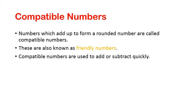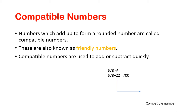Compatible numbers are used to add or subtract quickly. Let's see one example. Look at the number 678. We are going to round off this number to the nearest 100. So 678 plus 22 gives us 700. I added 22 to get the rounded off number. So 22 is a compatible number, because I only added 22 to form the rounded number.